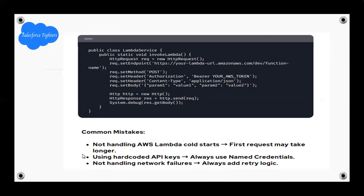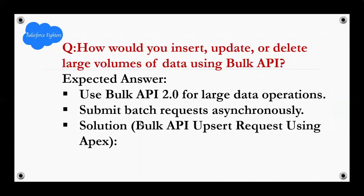Common mistakes: not handling AWS Lambda cold start — the first request may take longer. Hard-coding API keys — always use Named Credentials instead. Not handling network failures — always add retry logic.